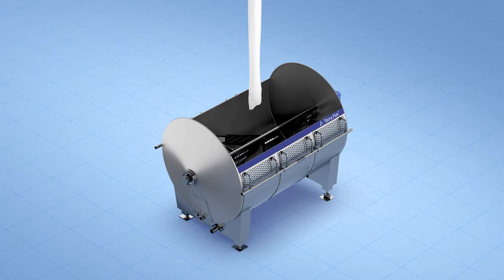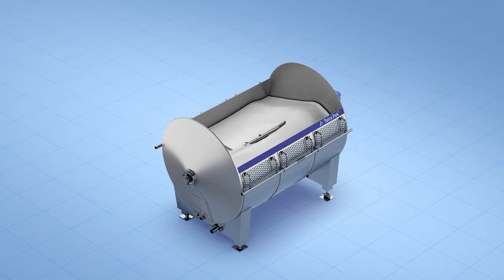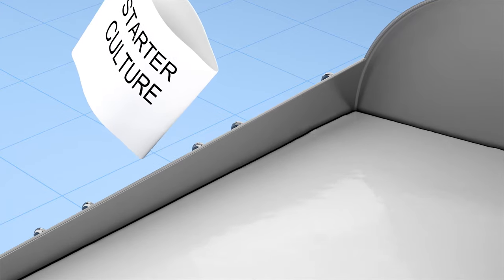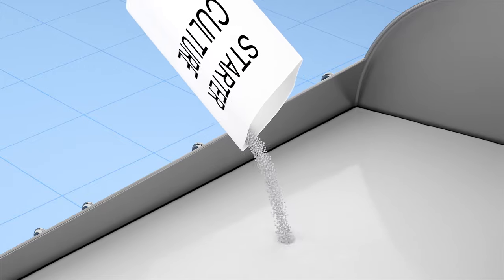Now let's start the actual cheesemaking. A vat, a special tank for making cheese, is filled with the pre-treated milk. And then starter culture and rennet are added. The starter culture, which contains non-harmful bacteria, gives the cheese its special aroma.